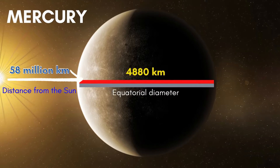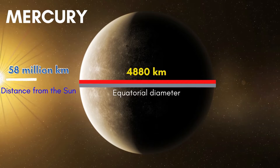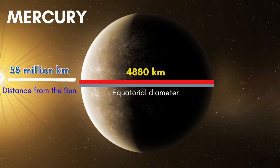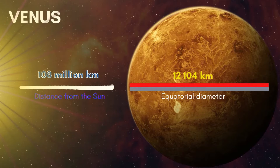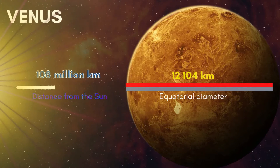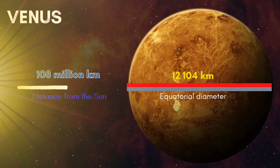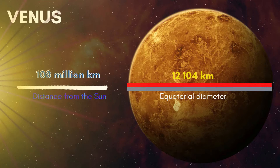Mercury has a distance from the sun of 58 million kilometers, with a planet size of 4,880 kilometers. This is Mercury. The second one is Venus. Venus has a distance from the sun of 108 million kilometers, with a planet size of 12,104 kilometers. This is Venus.